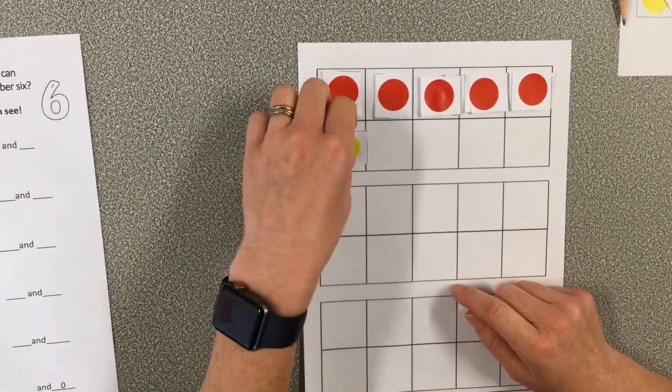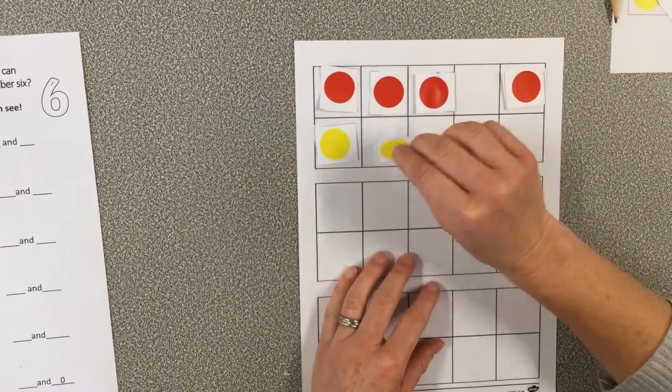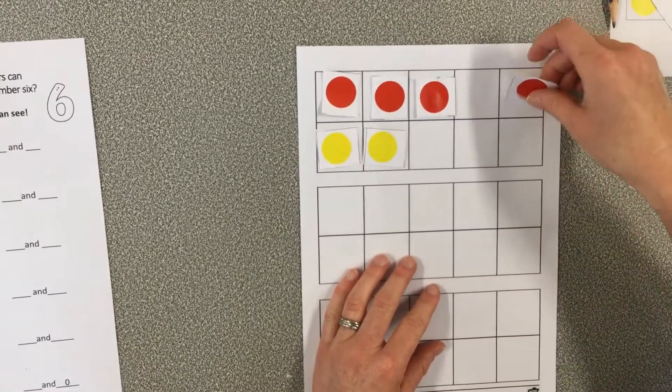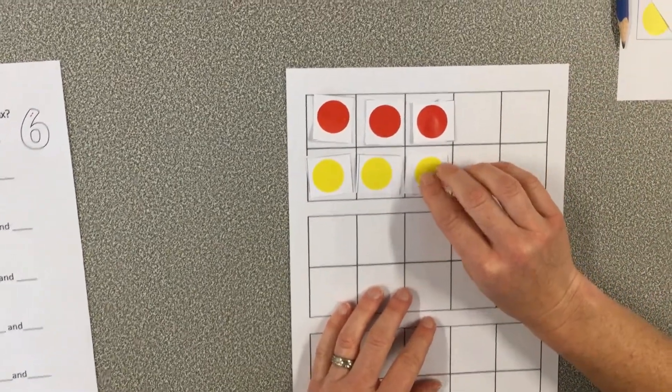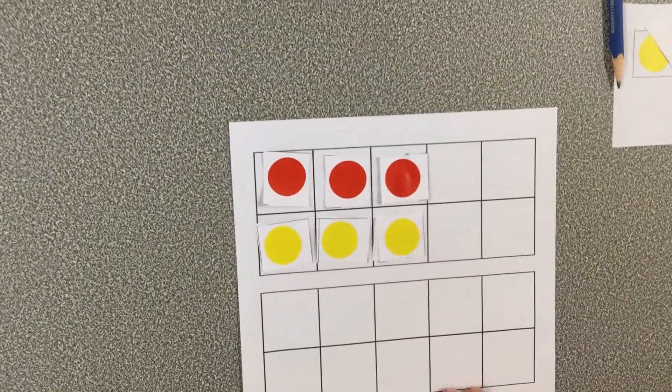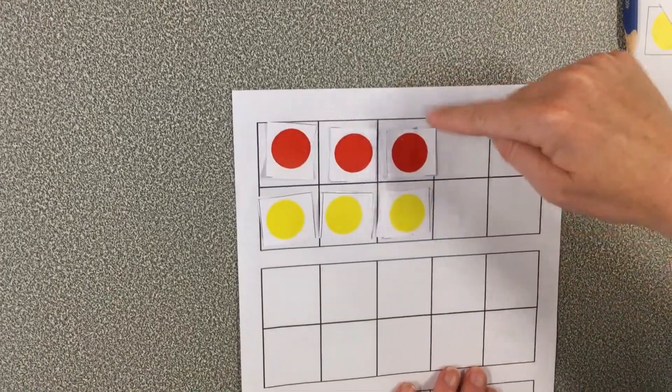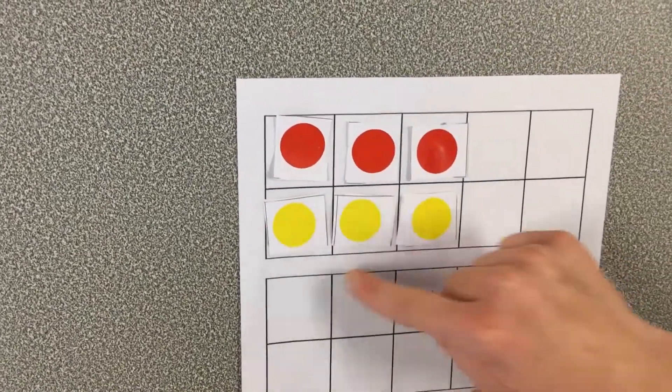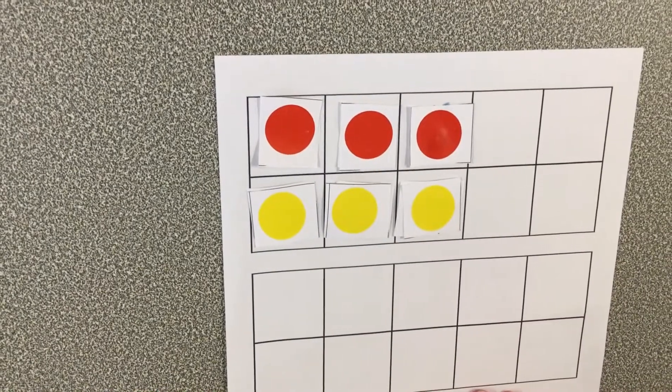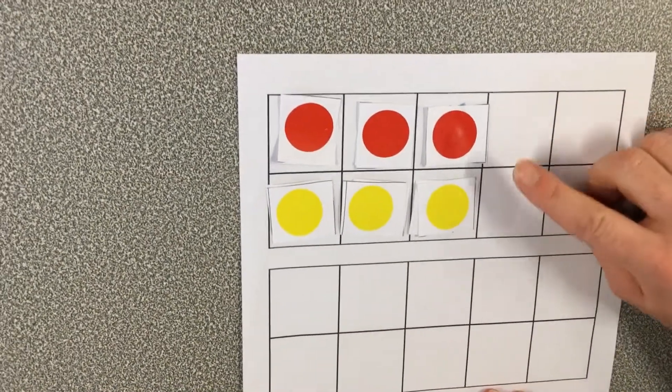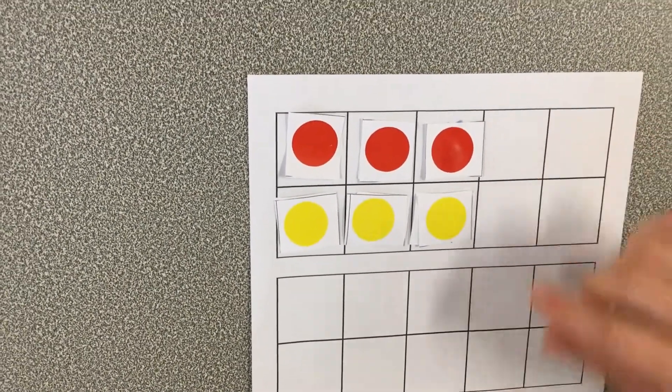I can try and move my tens frame around. What I'm going to do is move some down here because this can also help me see groups really clearly. It looks a little bit like a dice now, doesn't it? I've got a group of three and a group of three. So the number six can be made up from a group of three and a group of three. We can partition it that way.